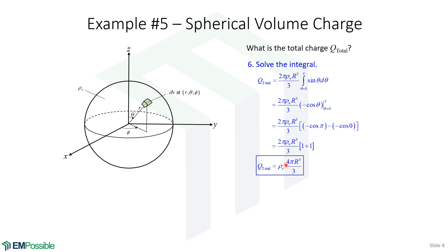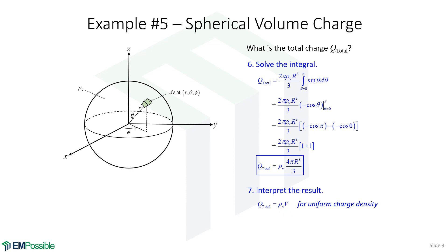We recognize 4 pi R cubed over 3 as the volume of a sphere. So we conclude: as long as we have a uniform charge density, whatever the shape, as long as we can evaluate its volume V, the total charge will just be the charge density times that volume.